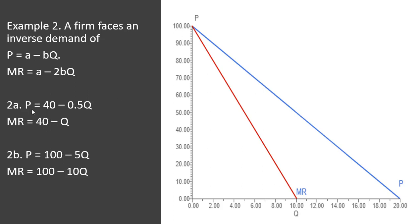If the firm faces an inverse demand of price equals 40 minus 0.5Q, marginal revenue will be 40 minus 2 times 0.5, and 2 times 0.5 is just 1. So we can write it as 40 minus Q.